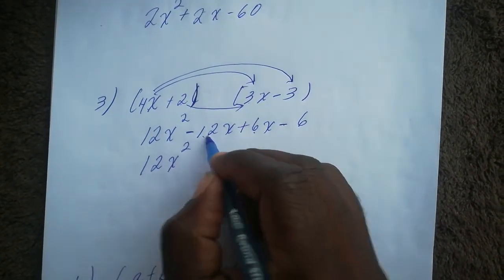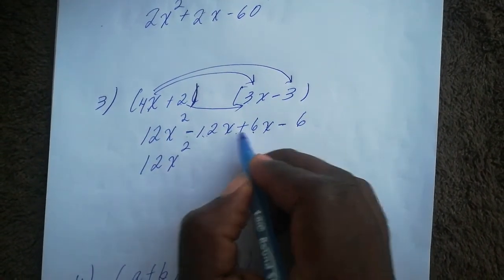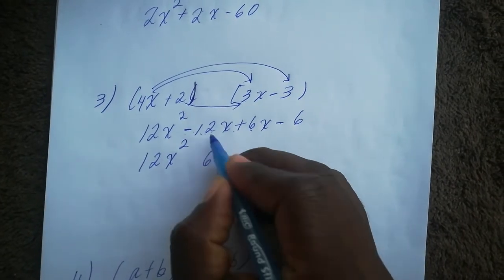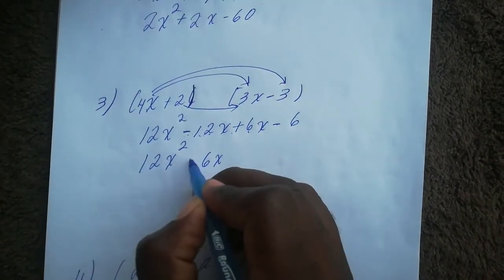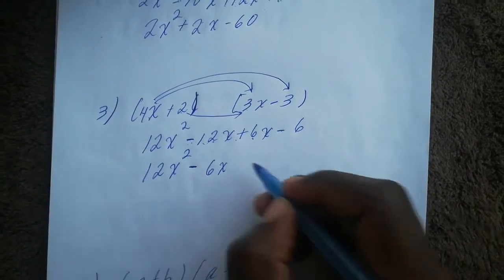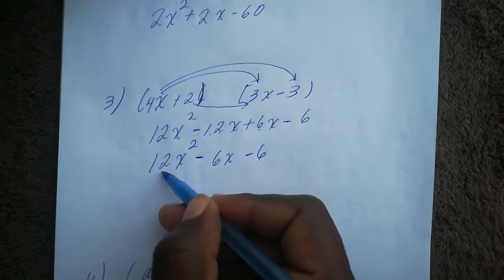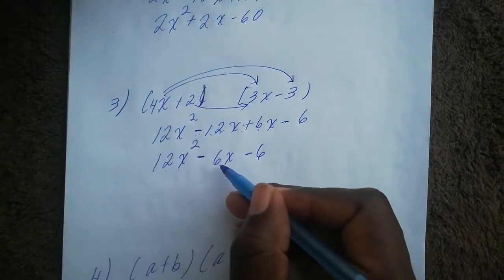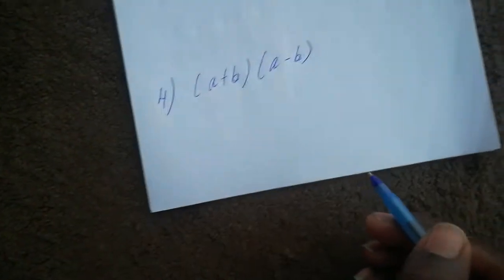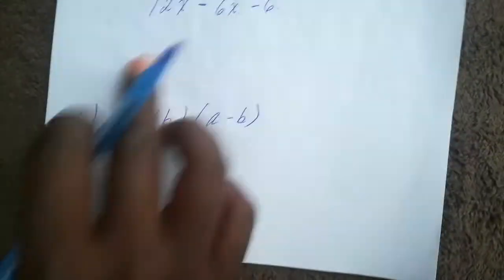So we have 12x squared, and for the x-terms: minus 12x and positive 6x. The signs are not the same, so I subtract 6 from 12 to get 6, and because 12 is the biggest I take its sign, giving minus 6x. Then minus 6 on its own. So my answer is 12x² − 6x − 6.